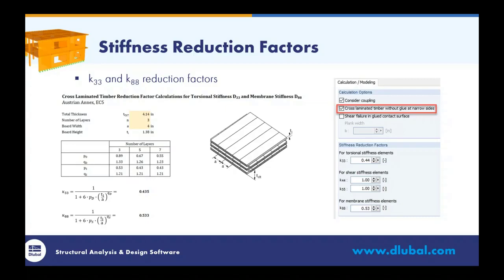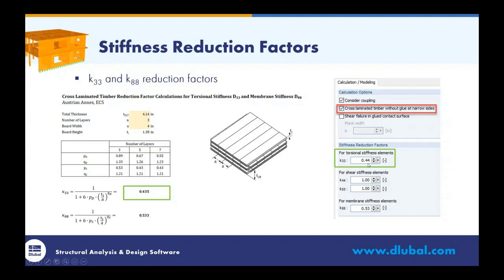K33 is for the torsional stiffness of our panel; K88 refers to the in-plane membrane stiffness. The Eurocode EC5 — specifically the Austrian annex — has equations discussing exactly what to do for stiffness reduction factors when there is no glue. Using a simple Excel file referencing those EC5 equations with total thickness 4.14 inches, 3 layers, and an approximate board width of 4 inches from the manufacturer, we determine K33 = 0.435 and K88 = 0.533. These are then input into the add-on module for torsional and membrane stiffness reductions. Some manufacturers already provide this information in the program; otherwise input it manually.